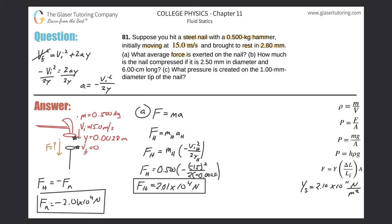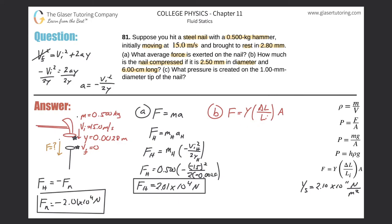Letter B: how much is the nail compressed if it is 2.5 millimeters in diameter and 6 centimeters long? Here we're dealing with steel compressing, so we use Young's modulus. The formula is: F = Y × (ΔL / L₀) × A. We want to solve for ΔL, so rearranging: Young's modulus and area come to the denominator, and the initial length comes to the numerator.